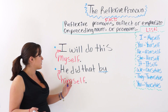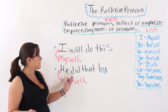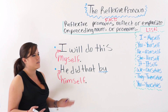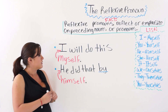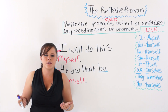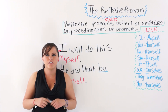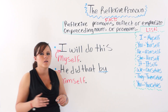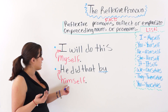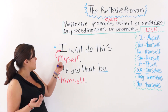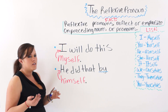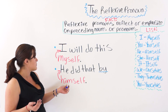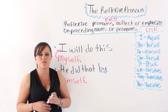For example: I did that without any help — I did that by myself. Or: today I was by myself in my house, meaning today I was alone in my house. The reflexive pronoun reflects on its corresponding personal pronoun. If it were 'Shannon did that by himself,' then 'himself' would be reflecting on Shannon, which is a noun.